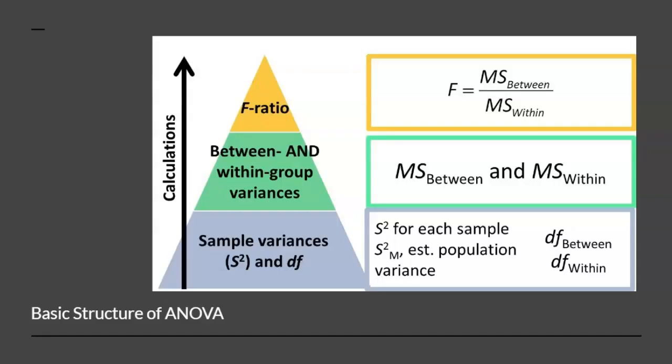Because ANOVA is combining multiple t-tests into a single statistical test, and ANOVA is comparing three or more samples, calculating an ANOVA requires many formulas and steps. This graph describes the basic structure of ANOVA. Please pause the video to write down the basic structure of ANOVA.